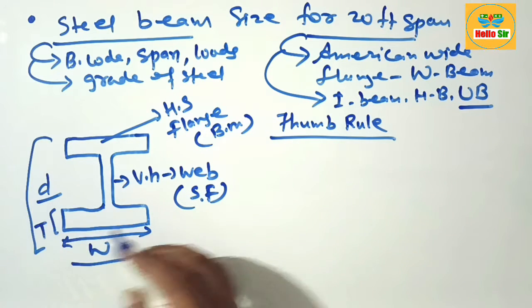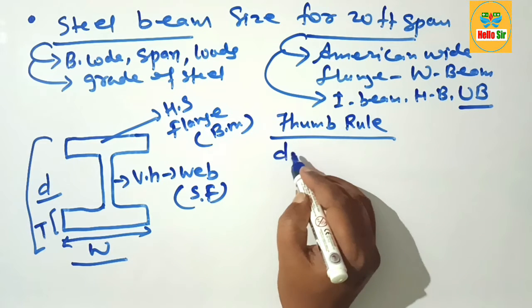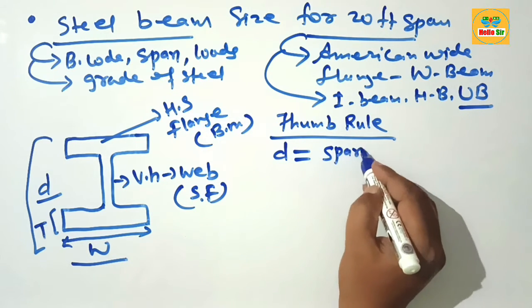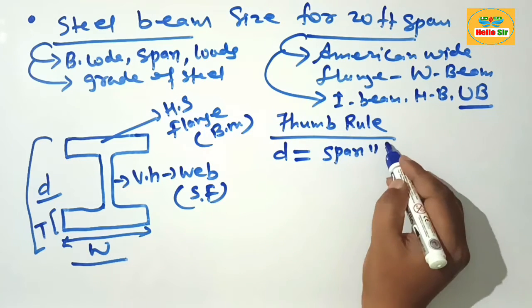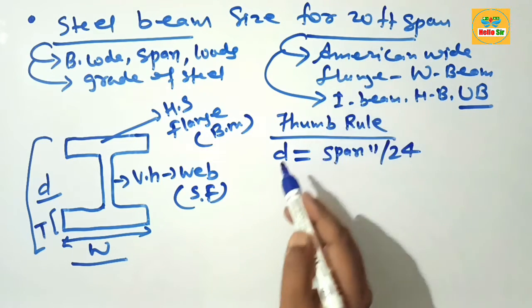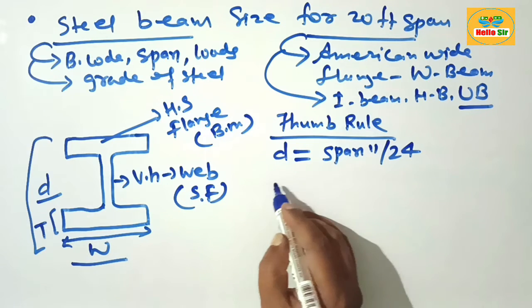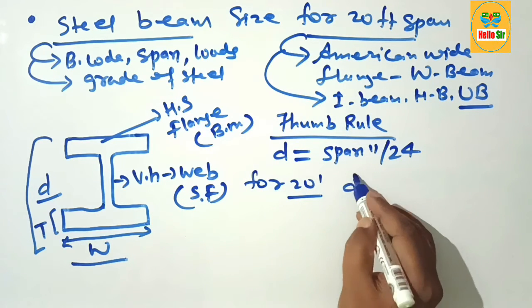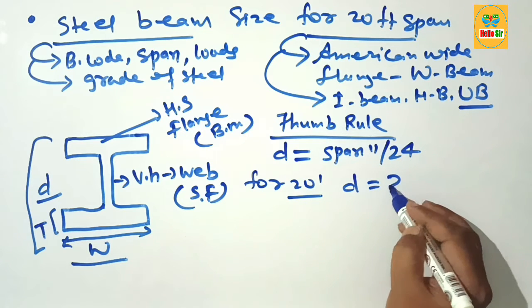divided by 24. For a span of 20 feet, the depth should be 20 times 12 divided by 24. This comes out to about 10 inches.